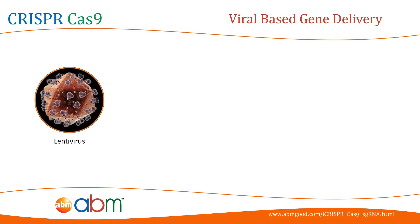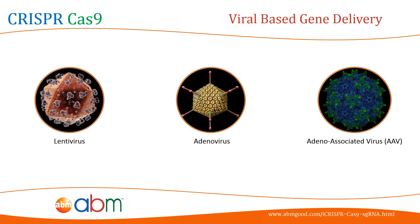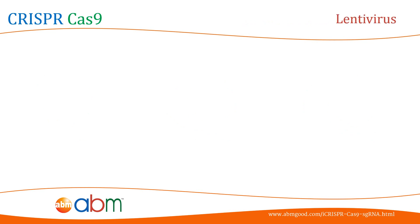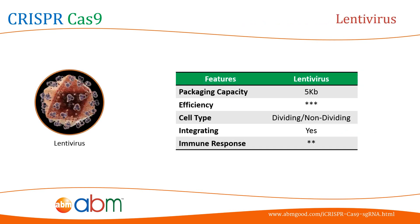These include lentivirus, adenovirus, and adeno-associated virus. All three types of viruses are required to be modified into replication-deficient viruses in order to be applicable for gene delivery. Lentiviruses are single-stranded RNA viruses belonging to the Retroviridae family. They enter the cells through the interaction of viral envelope protein and cell surface receptors. Once inside, they will stably integrate their genome to host cell chromosomes, achieving long-term transgene expression in target cells, which provides a major advantage to gene expression research.